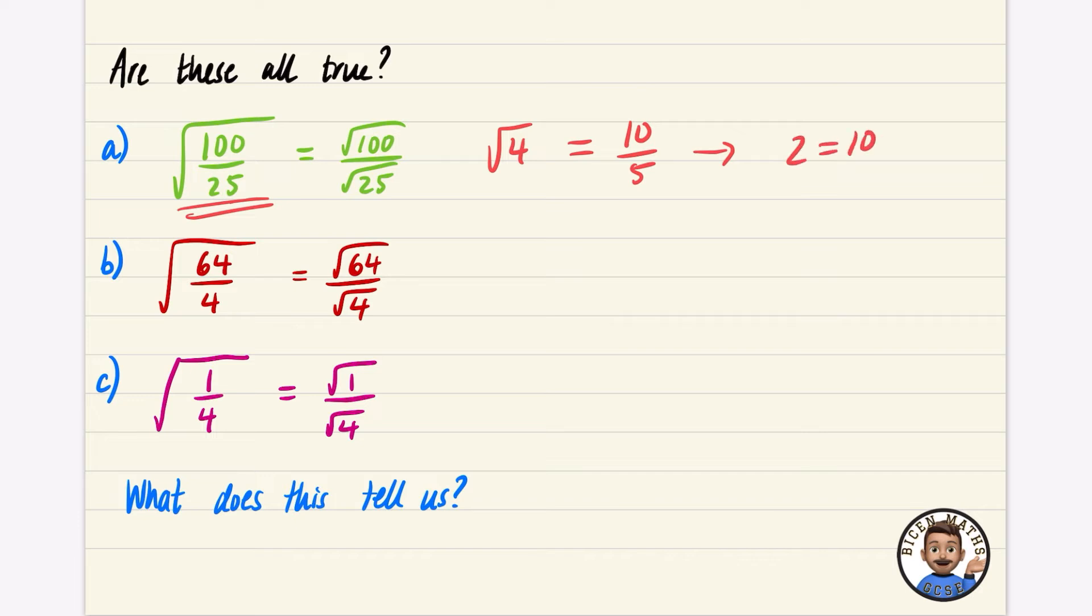The square root of 4 is 2. Is 2 the same as 10 divided by 5? Yes, it is, which means that thing there must be true as well.